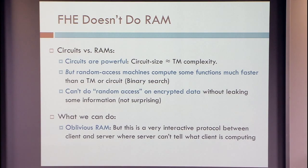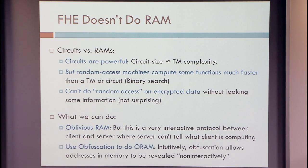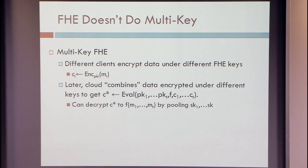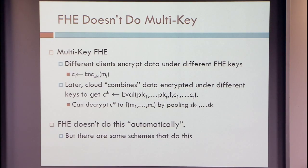What we can do is oblivious RAM — there are solutions that work in RAM complexity or close to that, but they're very interactive typically. You can use obfuscation to do oblivious RAM, and that gets rid of some of the interaction. Homomorphic encryption also doesn't do multi-key out of the box. There are multiple people with their own keys, and maybe you want to compute on data encrypted under different keys. Homomorphic encryption doesn't necessarily do that for you, but there are constructions that can, and hopefully I'll have time to talk about one of them.